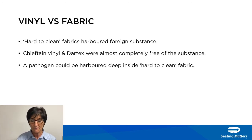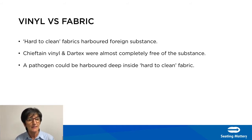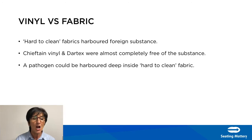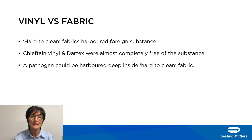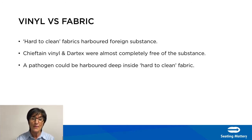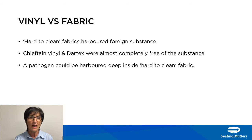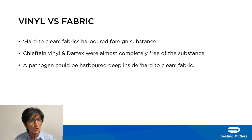Let's talk about vinyl versus fabric. Tests carried out on hard-to-clean fabrics concluded that upholstery-type fabrics harbored foreign substances deep within the structure of the fabric, while the Chieftain vinyl and the Dartex material were almost completely free of this substance. In the healthcare environment, these findings could show that a pathogen could be harbored deep within the fabric, so you really need to consider vinyl versus fabric because vinyl is much more easily cleaned.